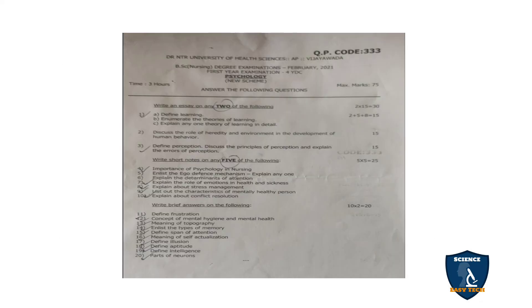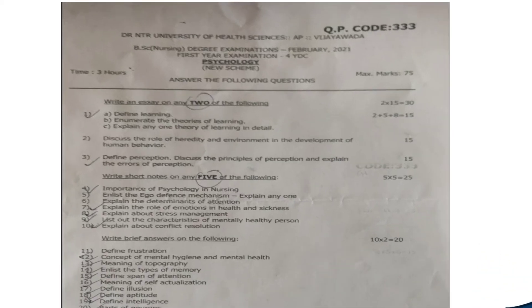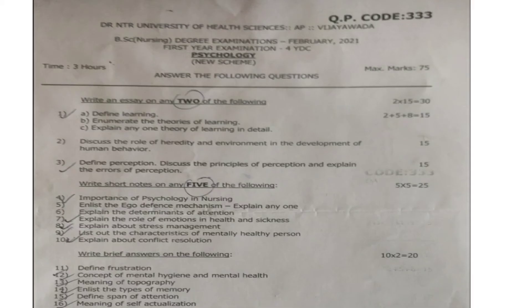Let's move on to the question paper. This question paper code is 3333 — Psychology question paper, February 2021. This question paper is for 75 marks and the time allotted is 3 hours.